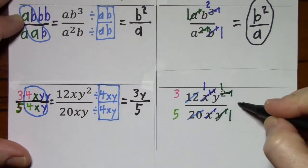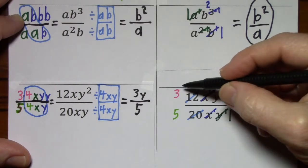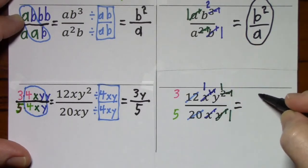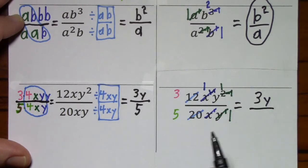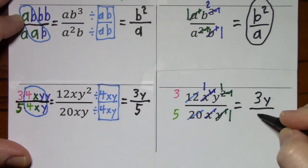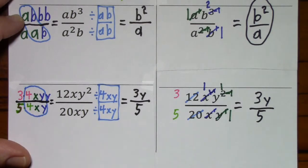So what's left standing? 3y to the first, so just 3y, over 5 times 1, so just 5. Notice that's what we got here when we wrote it out the long way.